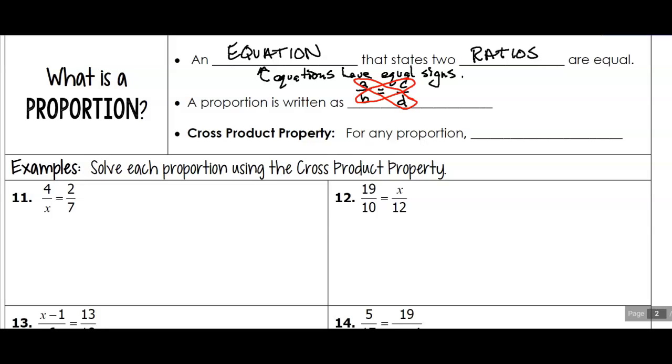We could multiply both sides by something to get rid of those, but our shortcut here is to use our cross product property, which says that A times D, so that's one of our cross products, is equal to B times C. And that's what we're going to use to solve these.